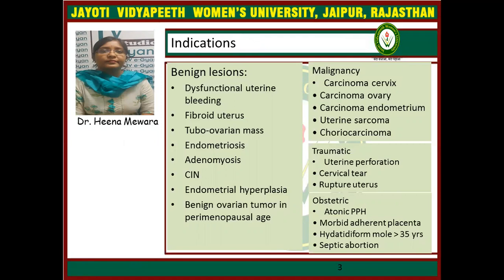Malignancy like carcinoma cervix, ovary, and endometrium, uterine sarcoma, and choriocarcinoma are other indications for hysterectomy. Uterine perforation, cervical tear, and ruptured uterus are the traumatic indications. And atonic postpartum hemorrhage, morbid adherence of placenta, hydatidiform mole, and septic abortion are the obstetric indications for hysterectomy.